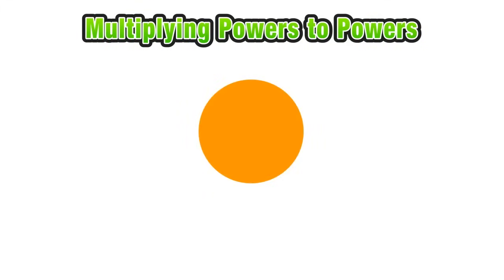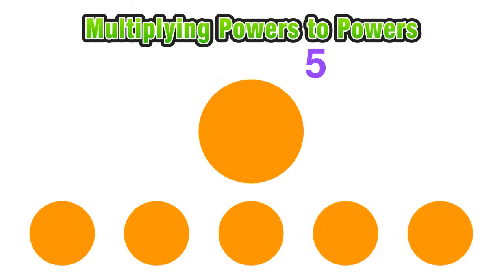Now let's pretend that this orange circle represents some value, whatever you want it to be. Now if I raised it to the fifth power, I could expand it as five orange circles being multiplied together. That would mean the same thing.